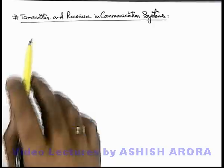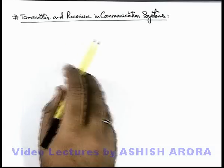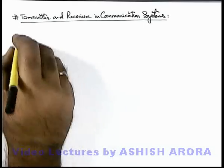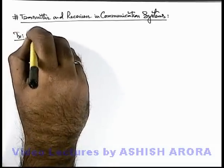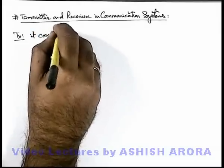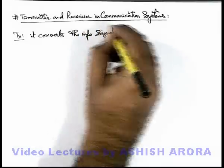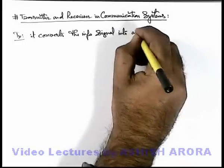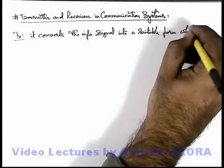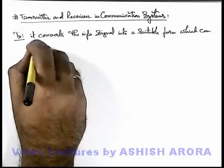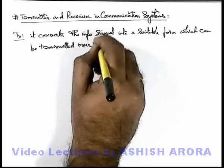Now let us study in detail about transmitter and receiver in communication system. We have already discussed in previous sections about transmitter and receiver. Here we can write that a transmitter is a device which converts the information signal from transducer into a suitable form which can be transmitted over the channel.